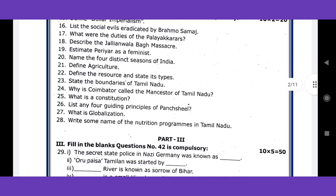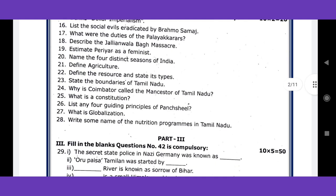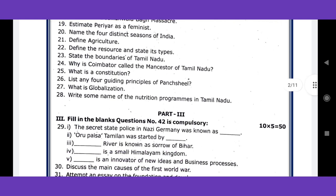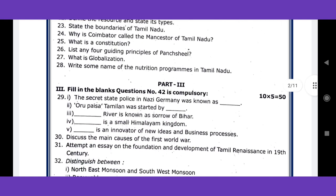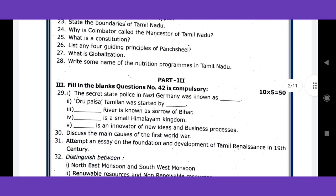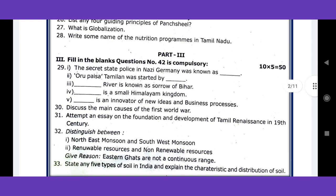When you say compulsory questions, write the name of the nutrition program in Tamil Nadu — that is the first compulsory question. Moving to part three, question number 29 involves fill-ups. You can find the fill-ups in the book-back.